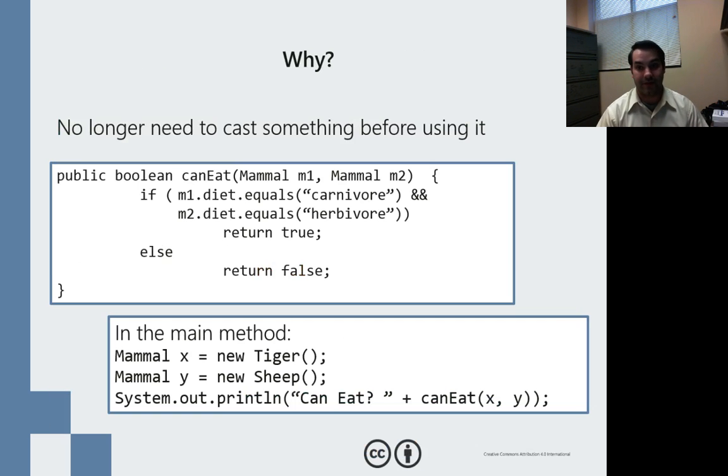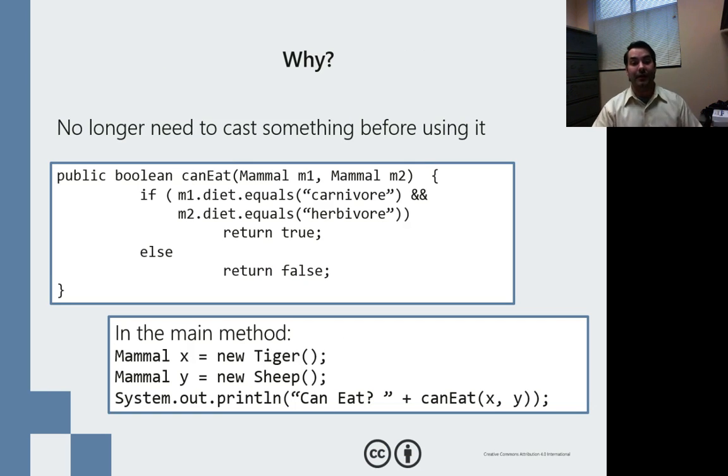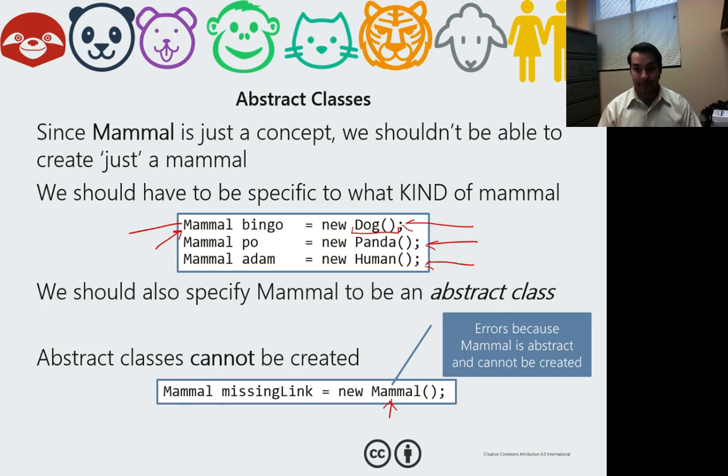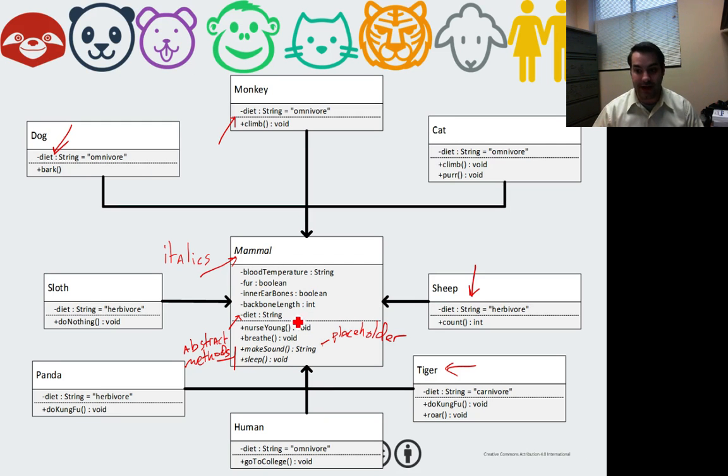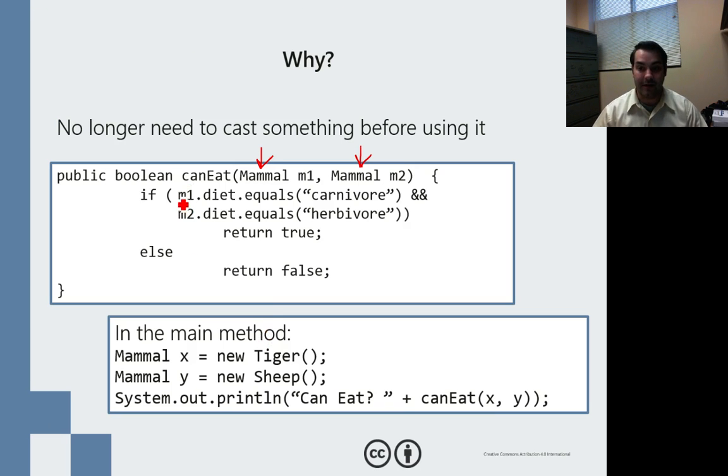So what can I do with this? Well, if I then make a method, I don't know what kind of mammals I'm going to be dealing with, but I know I'm going to be dealing with two mammals, such as, can one mammal eat the other mammal? Can M1 eat M2? I don't know what the mammals are, but I know that they're going to be at least of the mammal abstract class. Well, because each mammal is going to have some diet, hopefully it's been implemented, what that allows me to do is now grab M1's diet and M2's diet.